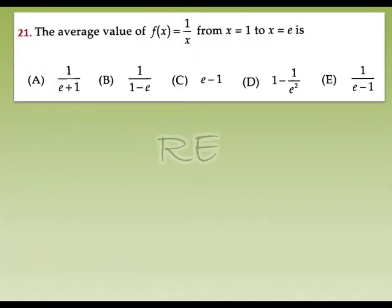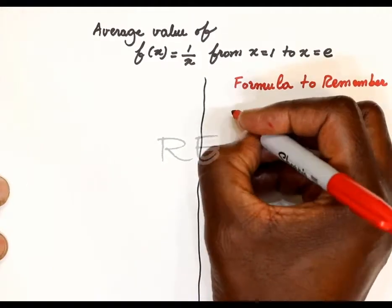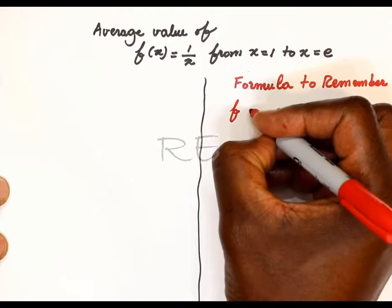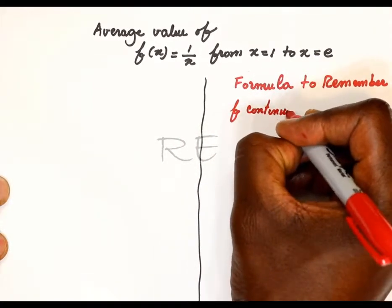For 21, we need to find the average value of f of x equal to 1 over x from x equal to 1 to x equal to e.